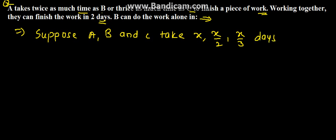Because A takes twice as much as B and thrice as much as C. So, X, X by 2 and X by 3 respectively to finish the work.